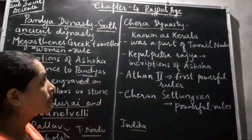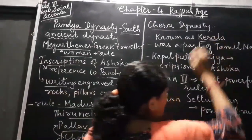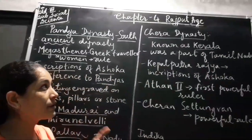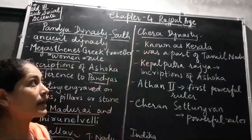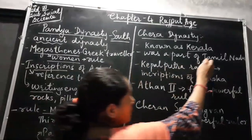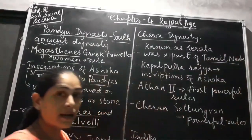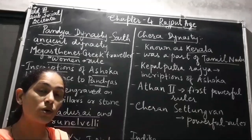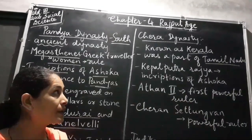Let us move on to the Chera dynasty. The Chera dynasty is now known as Kerala. In the map I had drawn, Chera is now known as Kerala. It was earlier a part of Tamil Nadu, so Kerala and Tamil Nadu were together as one part, and it was later on that they separated.